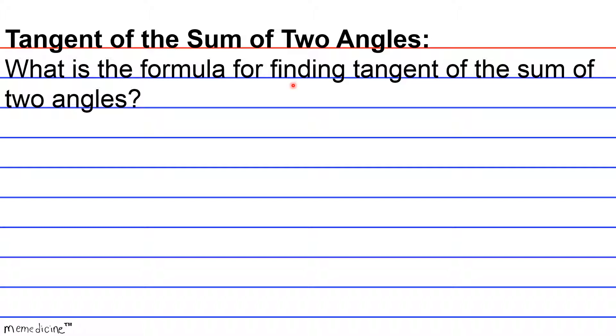Alright, so hopefully by now you are able to write out your answer. We find that the tangent of A plus B, any two angles, is equivalent to the tangent of A plus the tangent of B divided by 1 minus the tangent of A times the tangent of B. And you're probably like, what the heck? How do we get from this to this? Well, let's start with the basics.